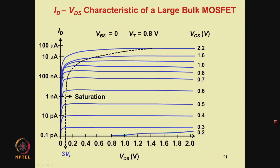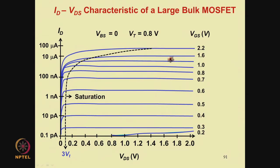The fact that these two features distinguish the subthreshold and superthreshold regions means that the mechanism of current flow in the superthreshold region is different from that in the subthreshold region. Let us understand this point by looking at the charge conditions in a MOSFET.